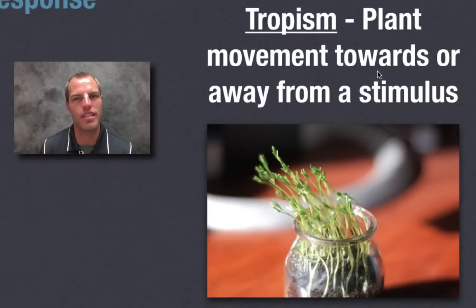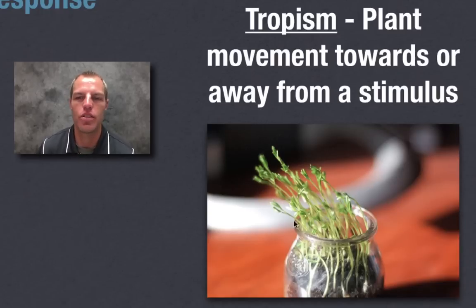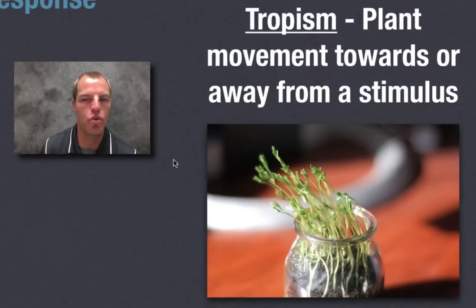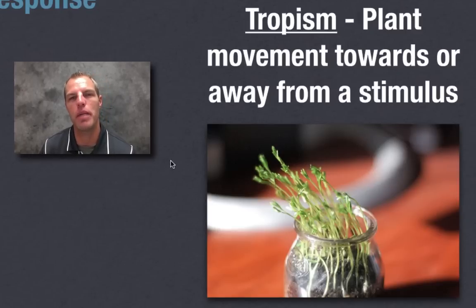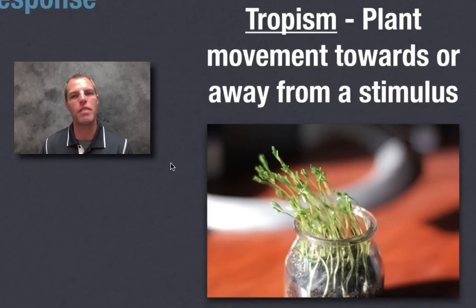When a plant moves towards a stimulus, we call it a positive tropism. When it moves away from a stimulus, we call it a negative tropism. In this case, the plant is growing towards the stimulus of the Sun, so we call that a positive tropism.